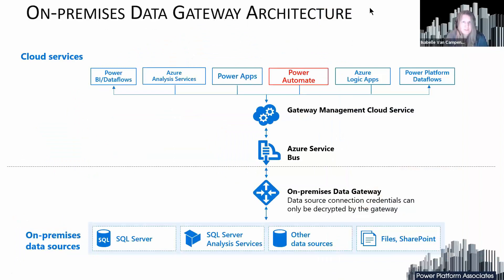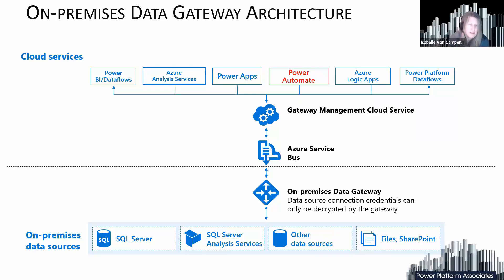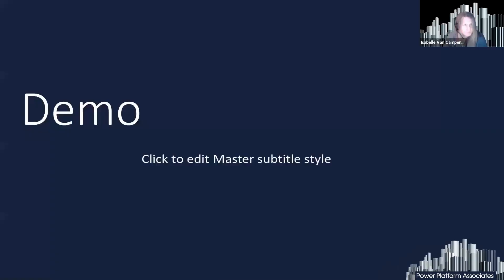For on-premises data sources, you will use the same data gateway architecture as in Power BI. This architecture is shared by different components in the data platform — Power BI, dataflows, Power Platform dataflows, Azure Analysis Services, Power Apps, Logic Apps, and so on. It is one gateway for all of them. In Power BI we are used to reading data; in Power Automate, we can also write data if we want.